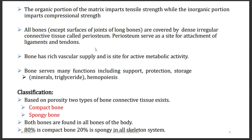The periosteum, like the perichondrium and pericardium, has got two layers. Bone also has a rich vascular supply, because blood vessels are able to reach bone and pass through it — different from cartilage, which does not have a blood supply. Bone serves many functions including storage, protection, and support. For storage, minerals and triglycerides are stored. Bone is also important for the formation of blood cells, called hemopoiesis or hematopoiesis.